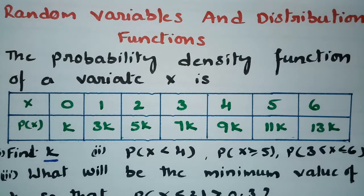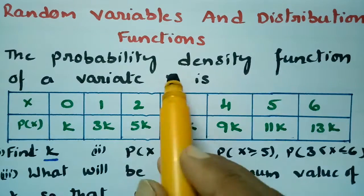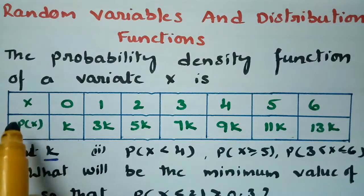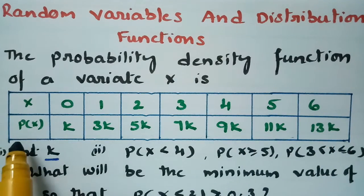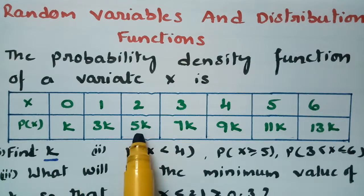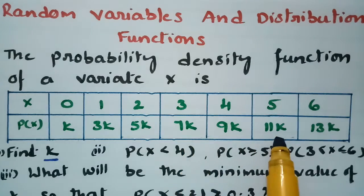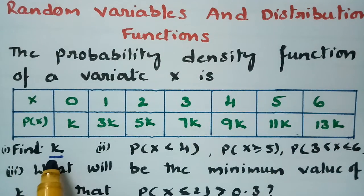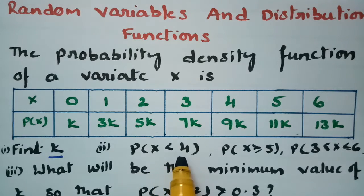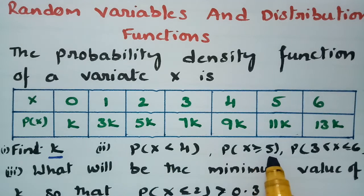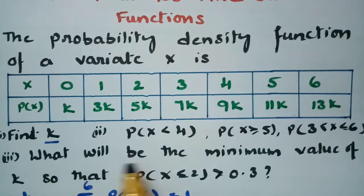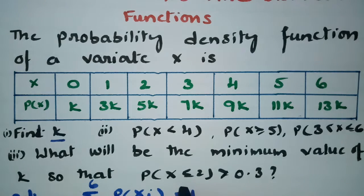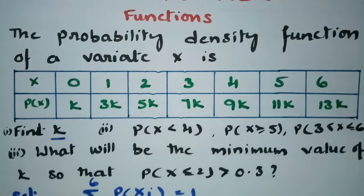This problem is from random variables and distribution functions. The probability density function of a variate x is given where x values are 0, 1, 2, 3, 4, 5, 6 and the corresponding PDF values are k, 3k, 5k, 7k, 9k, 11k, and 13k. We have to find the value of k, then the probability of x less than 4, probability of x greater than or equal to 5, probability of 3 less than x less than or equal to 6, and the minimum value of k so that probability of x less than or equal to 2 is greater than 0.3.